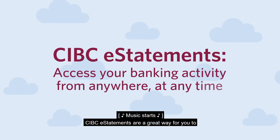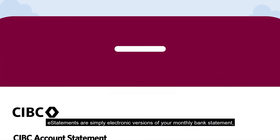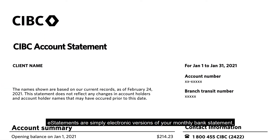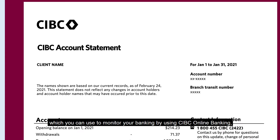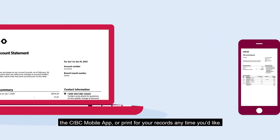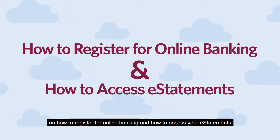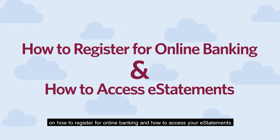CIBC eStatements are a great way for you to access your banking activity from anywhere, at any time. eStatements are simply electronic versions of your monthly bank statement, which you can use to monitor your banking by using CIBC Online Banking, the CIBC Mobile App, or print for your records anytime you'd like. In this tutorial, we'll guide you with step-by-step instructions on how to register for online banking and how to access your eStatements. There are many benefits to using eStatements.